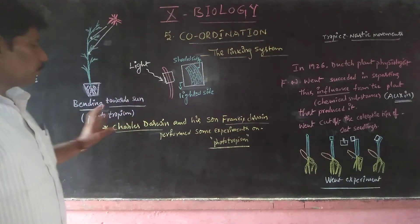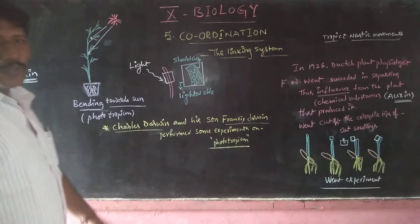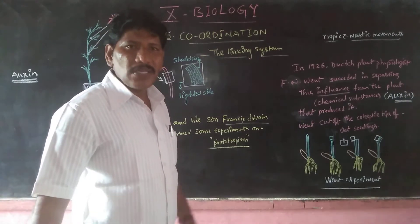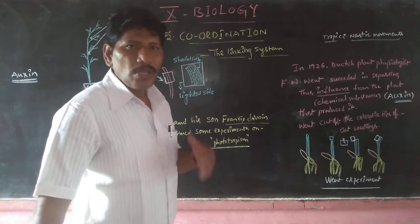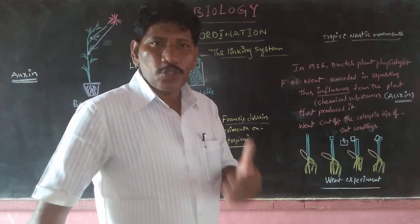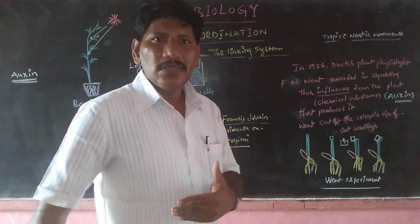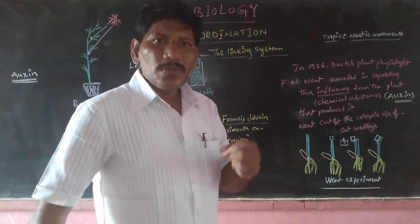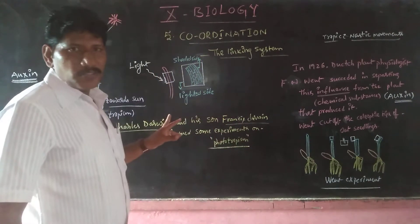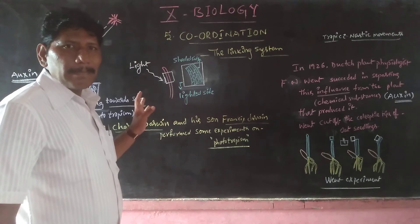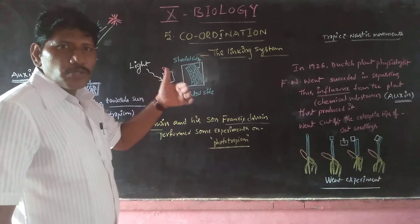First, let us focus on phototropism. As you know, a tropism involves a stimulus followed by a directional response. Plants are sensitive to particular stimuli like light, heat, gravity, pressure, water, and touch. Taking phototropism — the plant bends towards light because light is the stimulus and bending is the response.